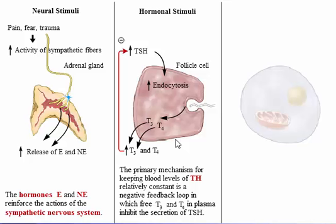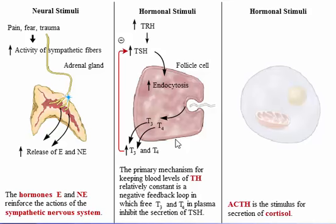The stimulus for secretion of thyroid-stimulating hormone comes from the ventral hypothalamic hormone thyrotropin-releasing hormone. It is released in pulses that vary in a circadian rhythm. Adrenocorticotropic hormone is the stimulus for secretion of cortisol.